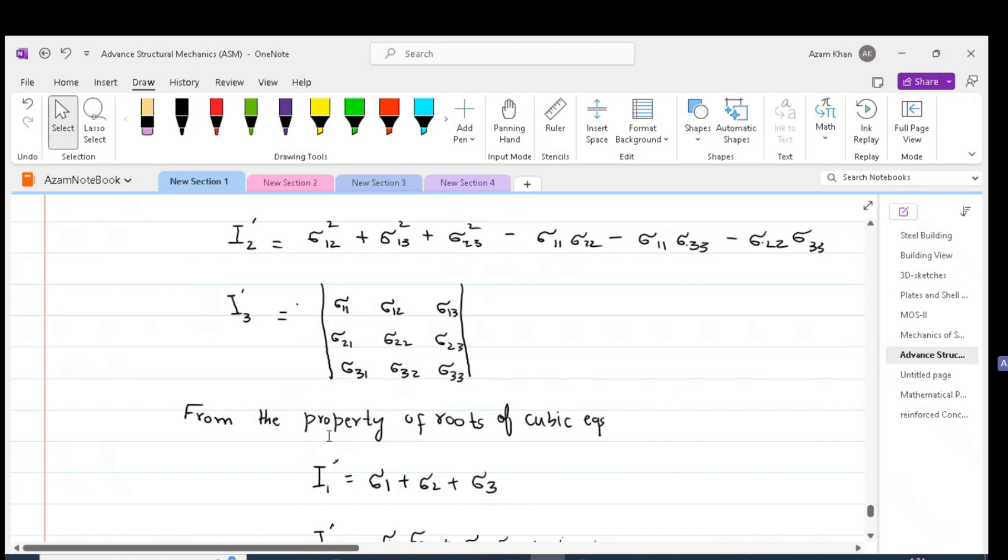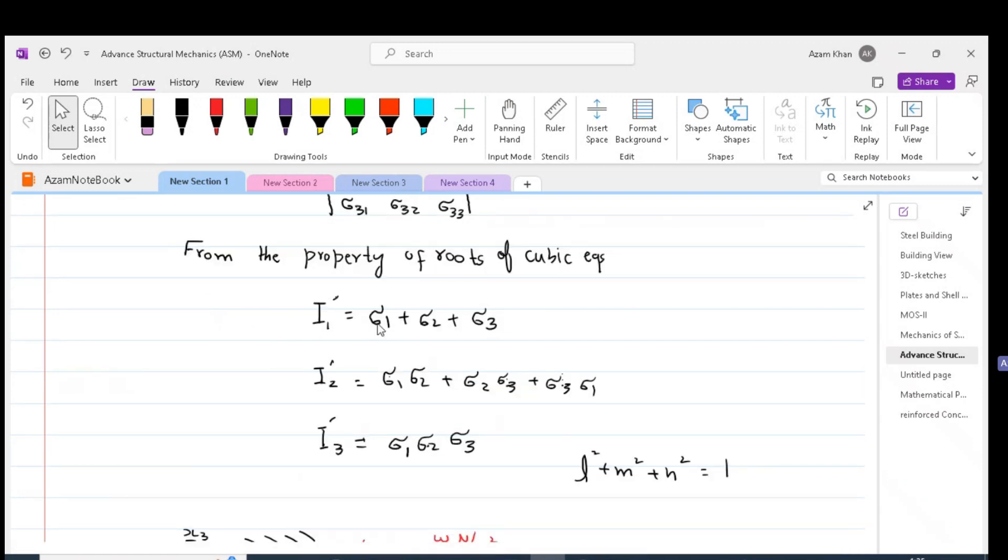From the property of roots of cubic equation, it can be shown that I1 is the scalar sigma_1 plus scalar sigma_2 plus scalar sigma_3. I2_prime is sigma_1 sigma_2 plus sigma_2 sigma_3 plus sigma_3 sigma_1.